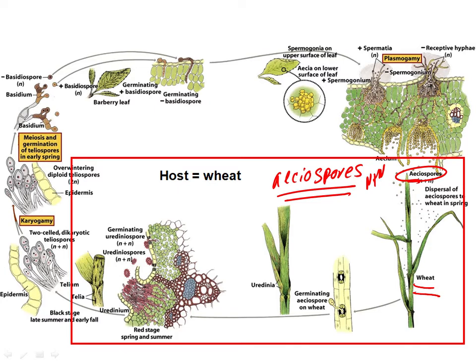The aeciospores are dispersed and land on wheat. Now on wheat, in the early summer, they're going to go through an infection and reinfection cycle. They first infect the wheat, producing dikaryotic mycelium in the wheat, and then essentially asexual reproduction takes place all through the summer. Another kind of spore is produced on the wheat — those spores are shed and reinfect the wheat. Those spores are called urediniospores.